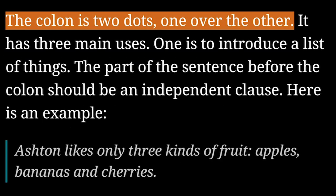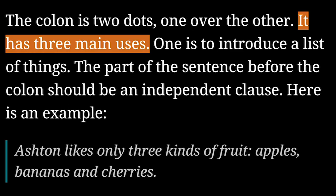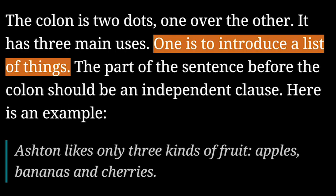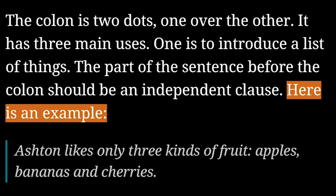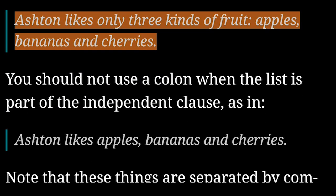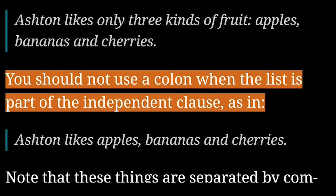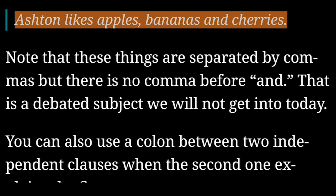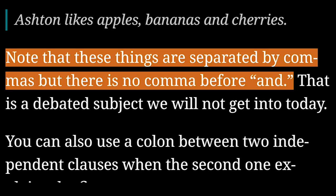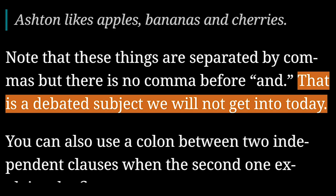The colon is two dots, one over the other. It has three main uses. One is to introduce a list of things; the part of the sentence before the colon should be an independent clause. Here is an example: 'Ashton likes only three kinds of fruit, colon, apples, bananas, and cherries.' You should not use a colon when the list is part of the independent clause, as in 'Ashton likes apples, bananas, and cherries.' Note that these things are separated by commas, but there is no comma before 'and' — that is a debated subject we will not get into today.